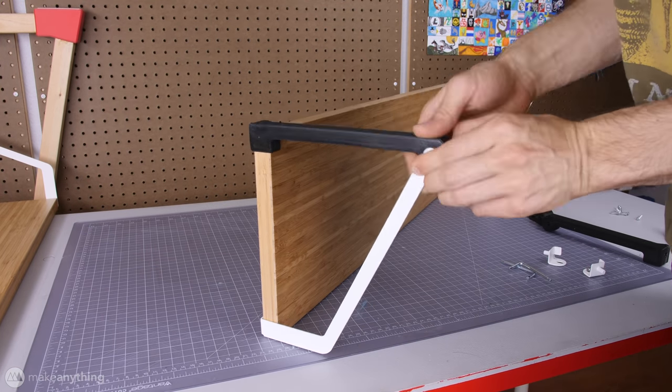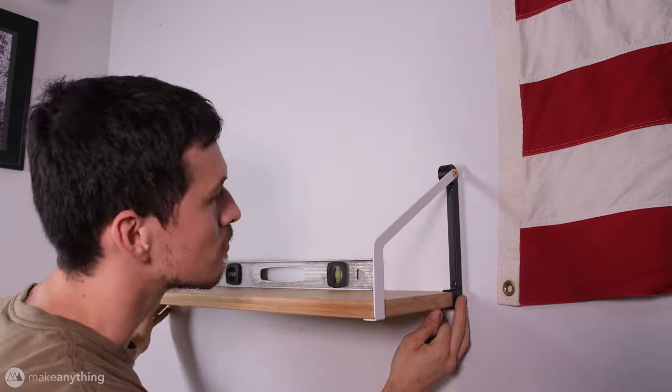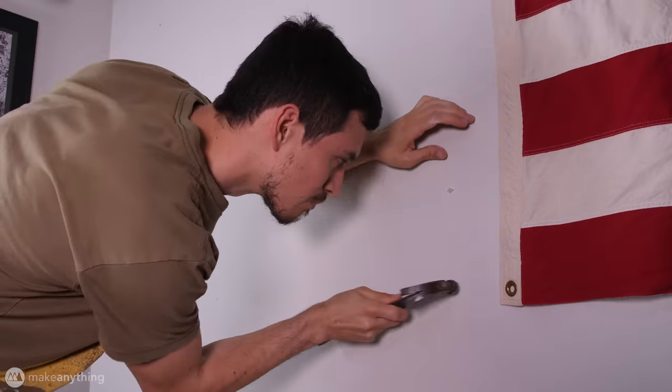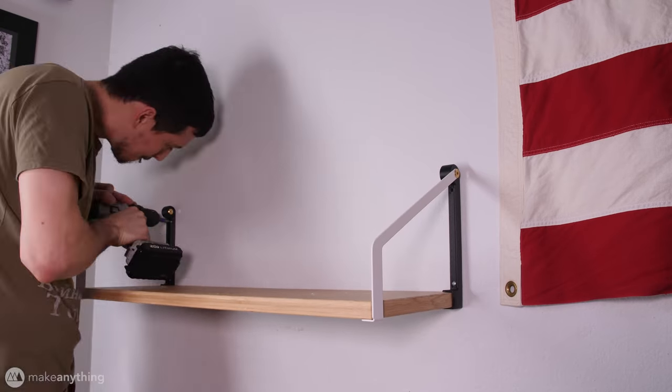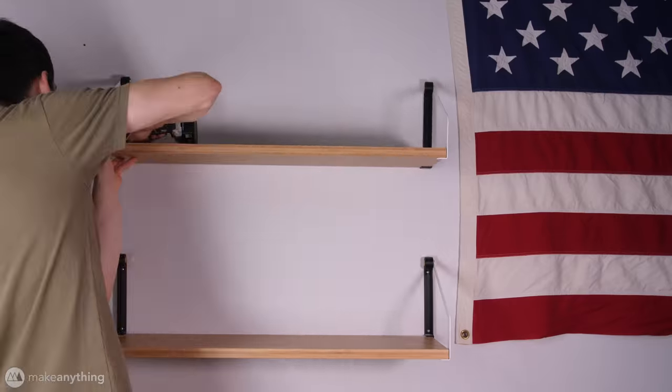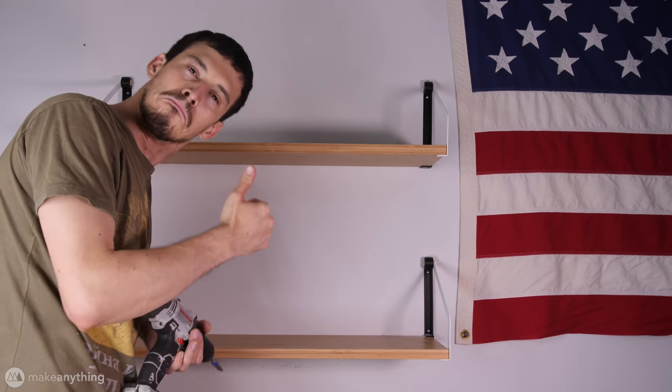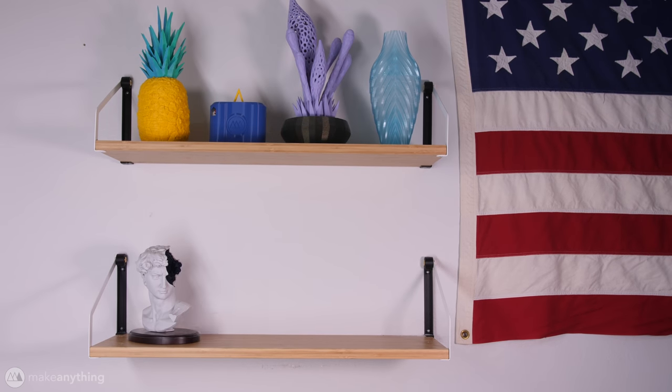So with my part in place, it's now easy enough to just go ahead and use some regular old drywall screws to mount this up against my wall. So there's one shelf and there's two shelves. Not bad. Now these shelves are ready to display some other cool prints.